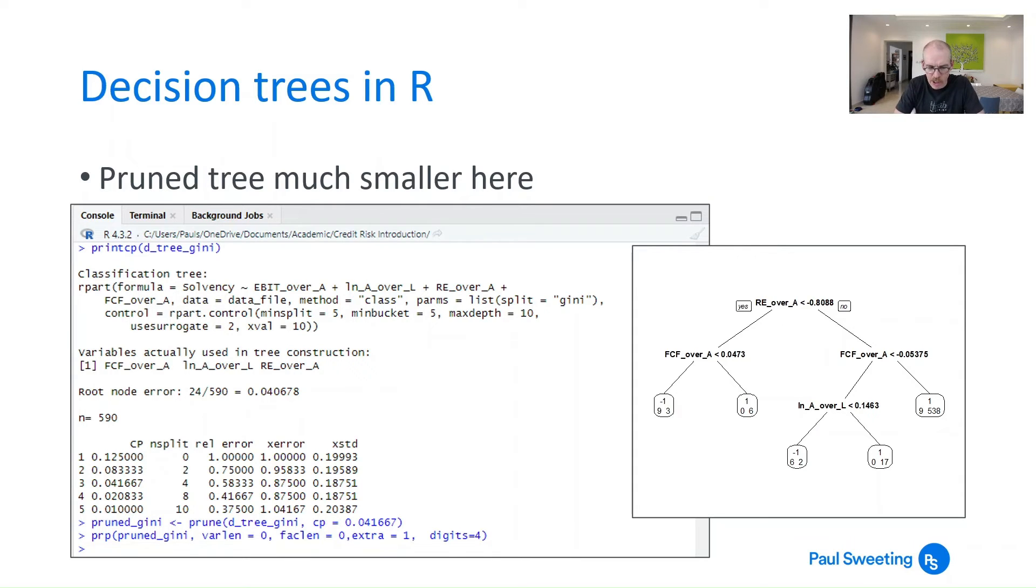So what we can see here is if we move to the complexity parameters, the one with the lowest cross-validation error actually has a complexity parameter much higher 0.041667. And if we prune the tree accordingly we end up with far fewer branches. If we'd have left it at 0.020833 that does leave you with a more complex tree still. But it just shows you how much power increasing that complexity parameter and requiring a greater increase in information gain can have.